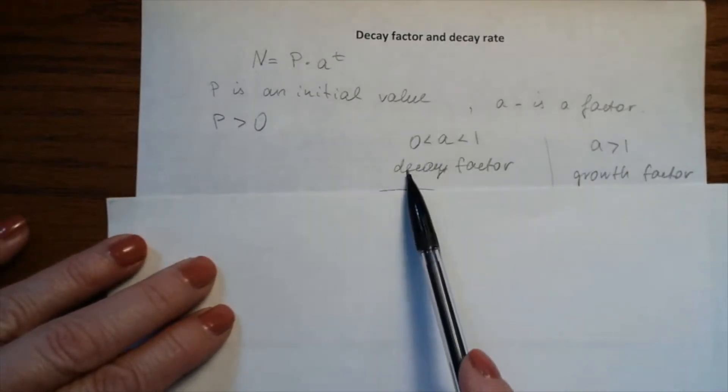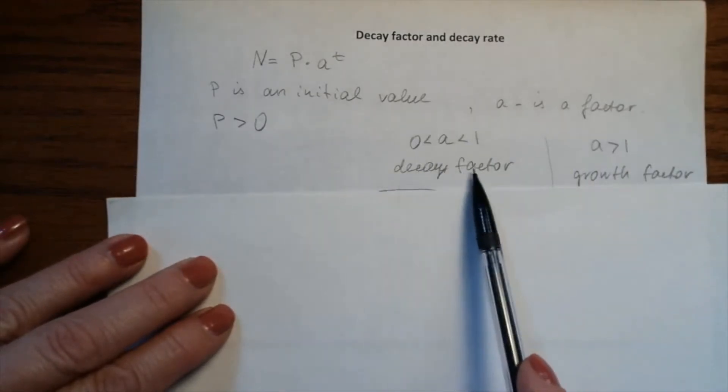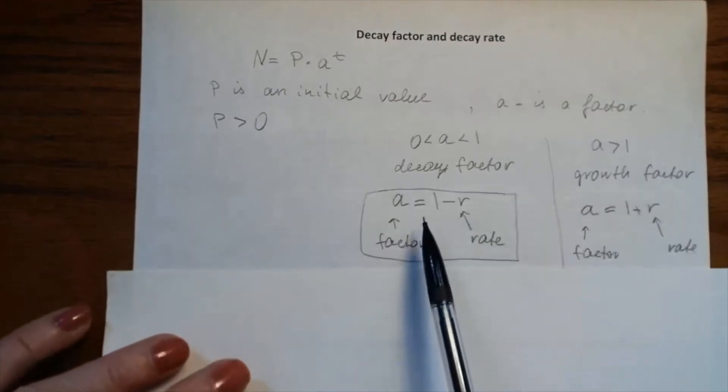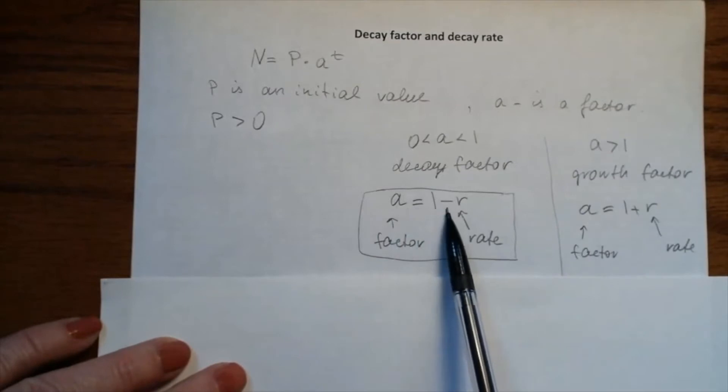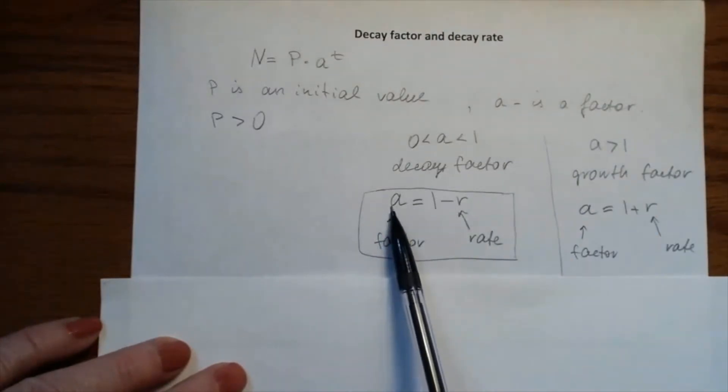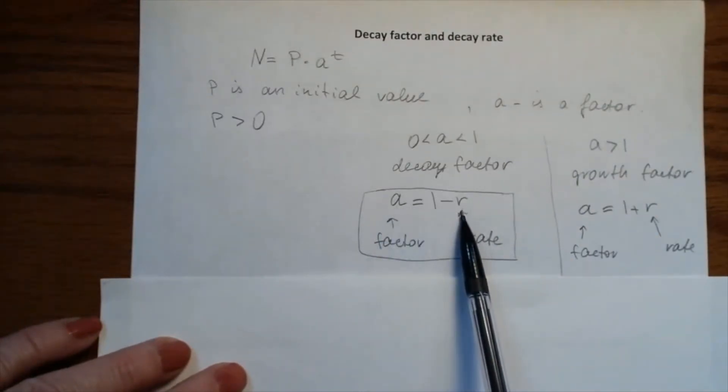In the first case, we call this the decay factor, and we use the formula a = 1 - r, where a is the factor and r is the rate.